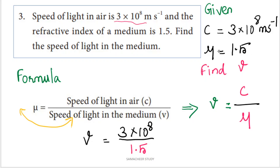The speed of light in the medium is represented by the symbol 'v'. The standard formula for refractive index is: mu equals speed of light in air divided by speed of light in the medium, that is, mu equals c divided by v.